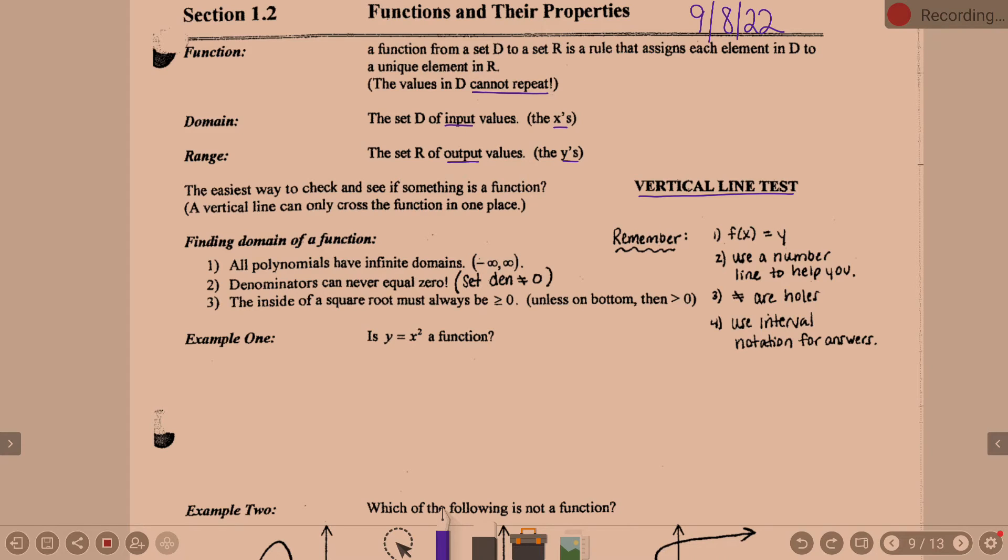Now, we're going to look a little bit at functions, domain, and range. We will delve into this more tomorrow when we look more at domain. But when we talk about domain, we're going to look at the fact that all polynomials have infinite domains, using the idea of negative infinity or positive infinity.